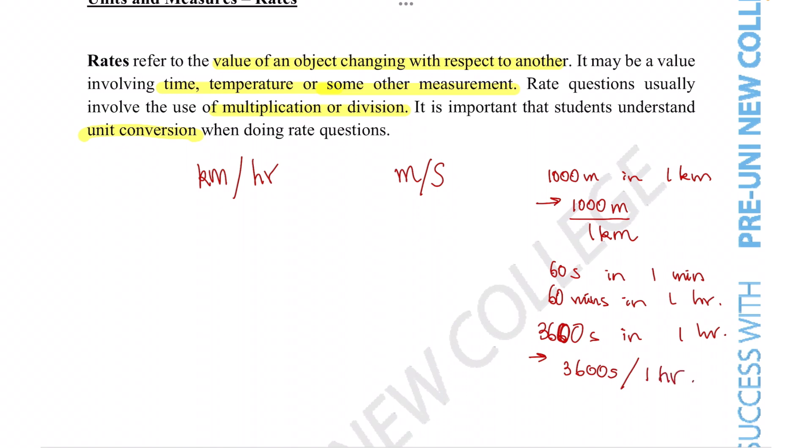Writing your rates as a fraction can be helpful because you can cancel out the units just like you do with numbers cancelling out. For example, if you've got 15 over 3 times by 1 over 5, the fives cancel out and the threes cancel out and you get a much simpler number. Similarly, you can also apply this concept to units.